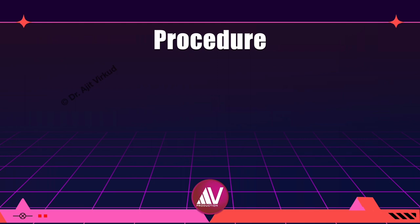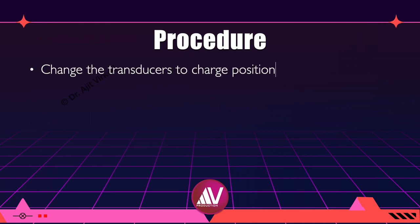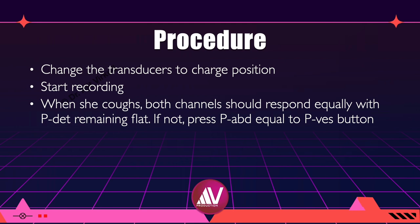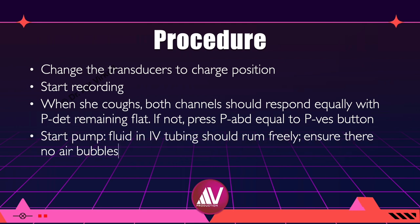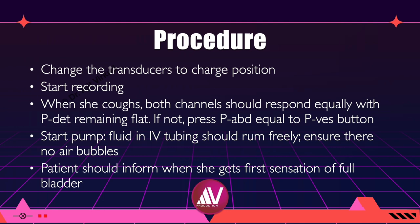Change the transducers to charge position, then press the run or start button to start recording. After asking the woman to cough, both channels should respond equally with P-DET remaining flat. If not, press the P-DET button to bring it to zero. Start filling the bladder by clicking the start pump button, ensuring that the fluid in the intravenous tubing is running freely. Instruct the patient to inform you when she gets the first sensation of wanting to empty the bladder — this is the first desire to void. Strong desire is when the woman should empty the bladder due to uncontrollable urge. Capacity is when she can no longer hold the urine in her bladder.